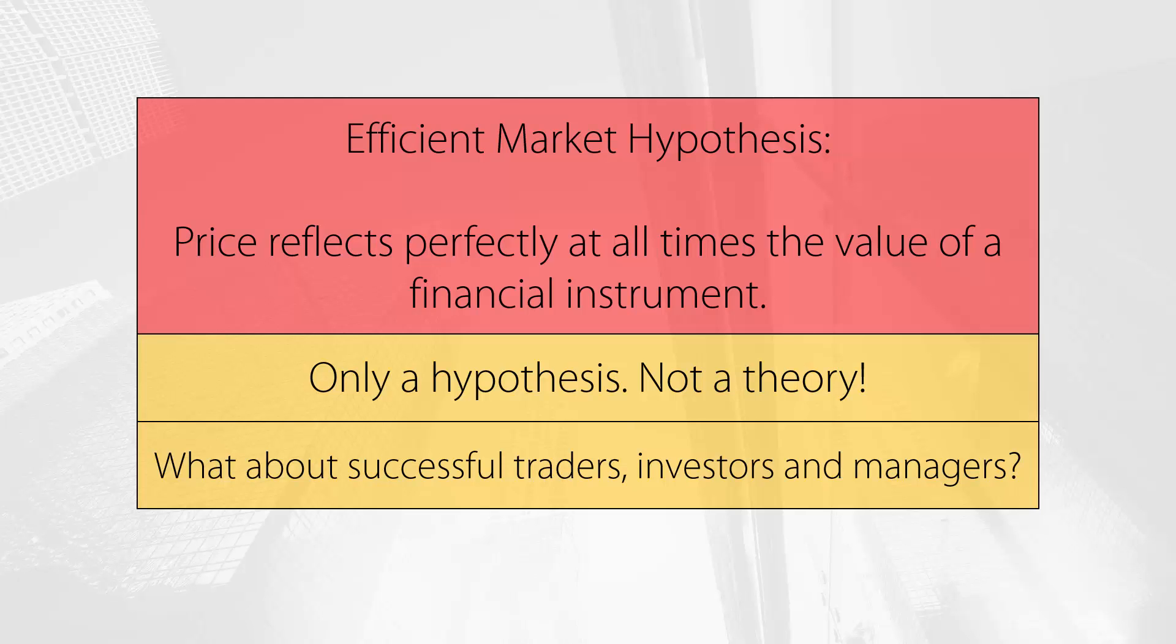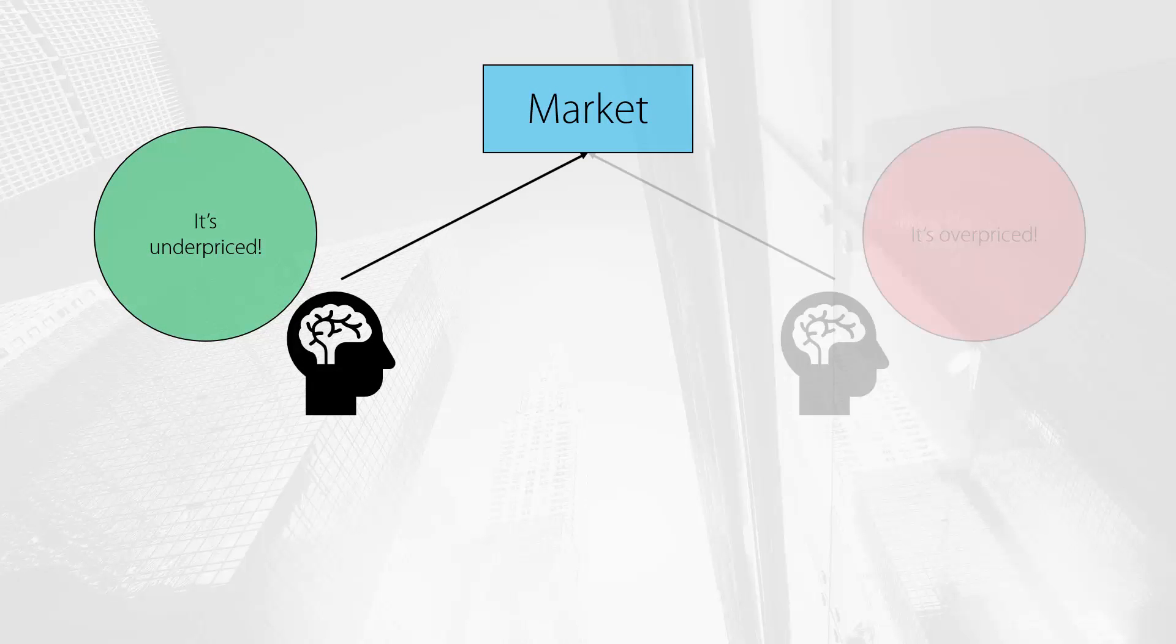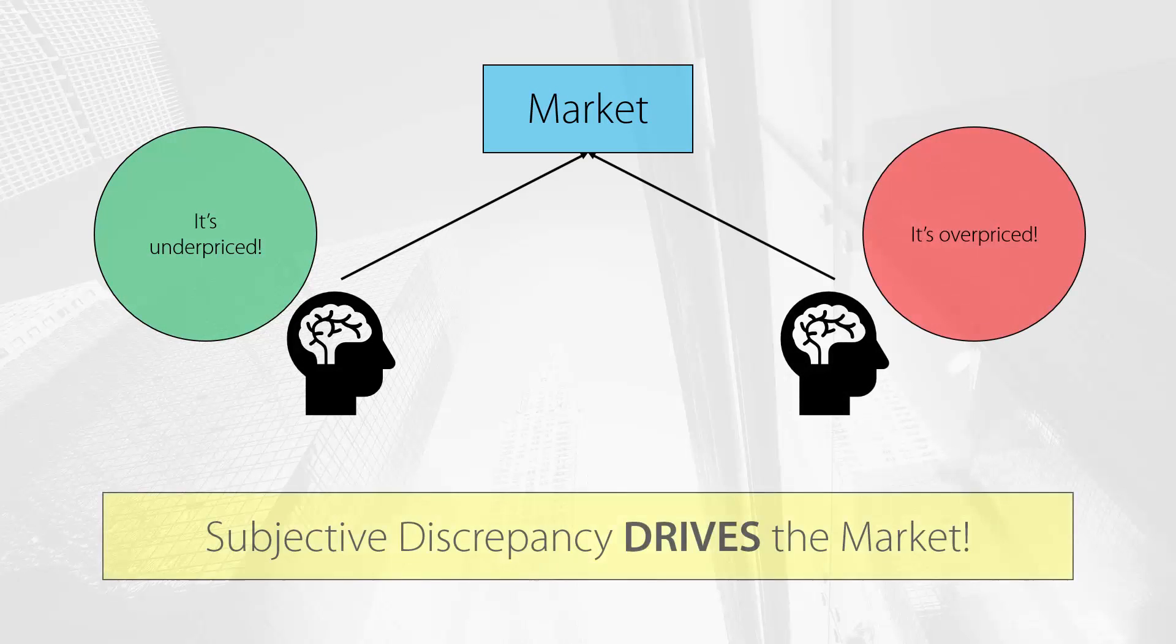Another way of looking at this is that traders and investors vary significantly in their subjective interpretation of the markets, and this variation is the underlying driver of the markets. For example, trader A and trader B might look at the same chart and arrive at different conclusions based on their analysis. They will act accordingly to their analysis, risk appetite and knowledge about the markets.